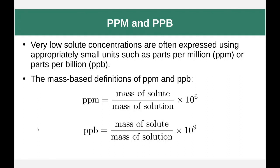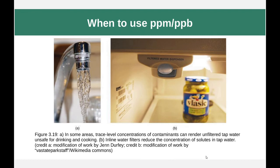PPM (parts per million) and PPB (parts per billion) are similar to percent by mass. Instead of multiplying by 100%, we multiply by 10 to the 6th for PPM or 10 to the 9th for PPB. We use these units because the concentrations being described are very, very small, and we don't want to write extremely small numbers. You'll see PPM and PPB a lot with water or air samples — anywhere a very small amount of a substance may have a very large effect.